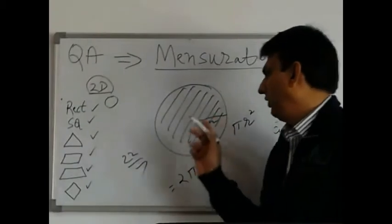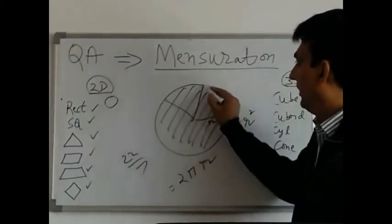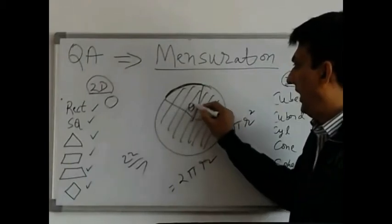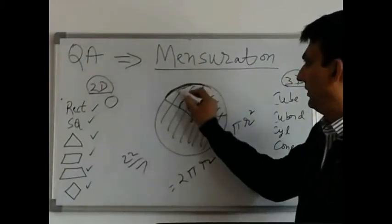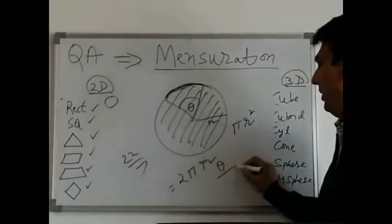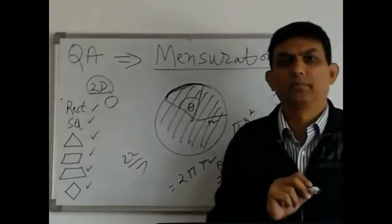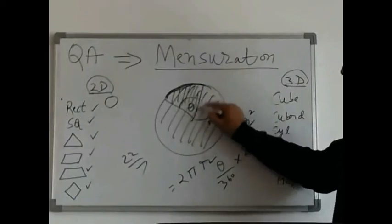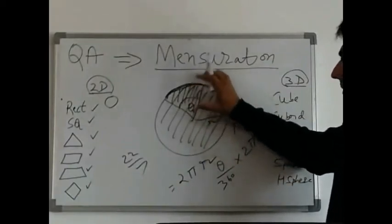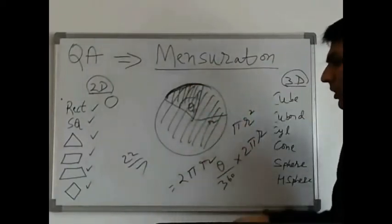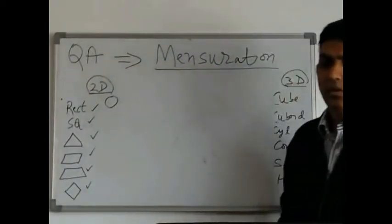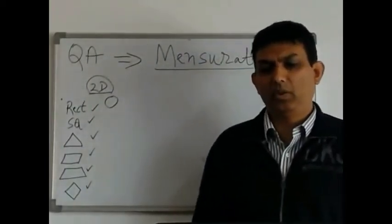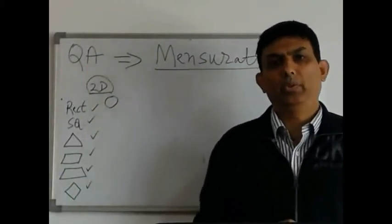You may also be asked to find the length of an arc. If the angle is theta, the length of the arc is theta divided by 360 into 2πr. Similarly, the area of a sector is theta divided by 360 into πr squared. This was about our 2D figures. In the next class, we will be taking up our 3D figures. Thank you.